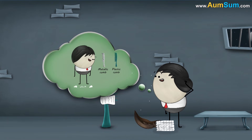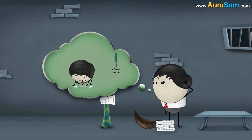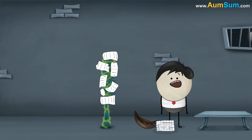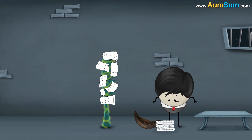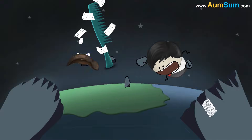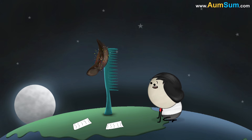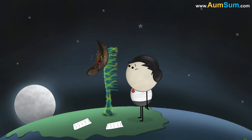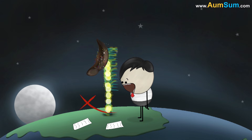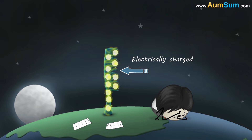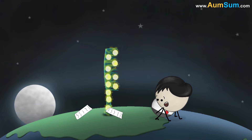However, do you think, like a plastic comb, a metallic comb would also attract the pieces of paper? No. A metallic comb will not attract the pieces of paper like the plastic comb. It is because plastic is not a good conductor of electricity. It does not allow the electric charges to flow through it onto the earth, so the charges build up in the plastic comb, making it electrically charged and enabling it to attract the pieces of paper.